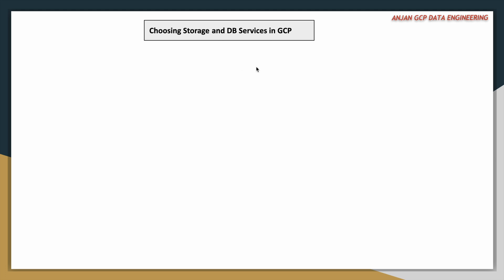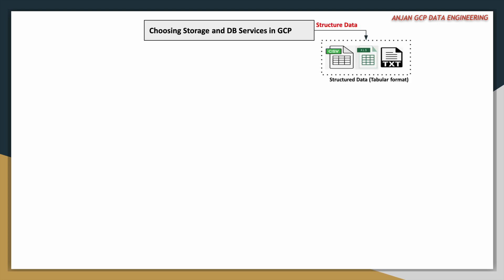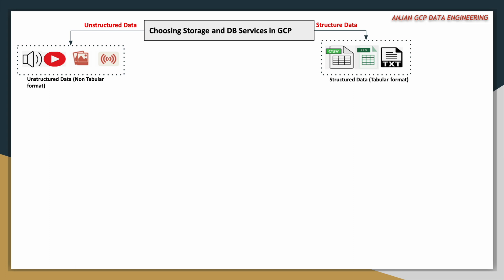When it comes to data formats and data types, usually there are different kinds of data available. If you have to segregate that data by data type, it can be divided into two different types. The first one is structured data, and the second one is unstructured data.